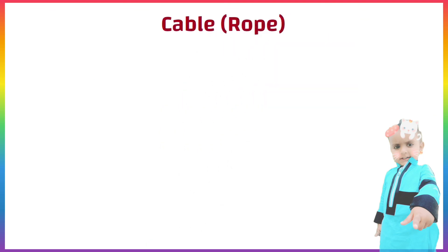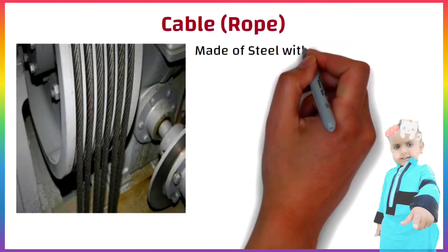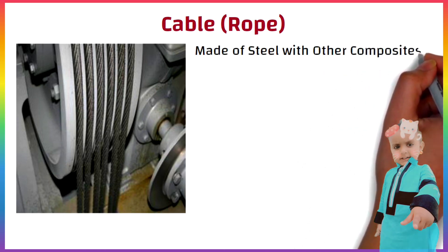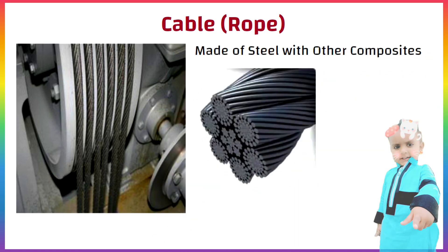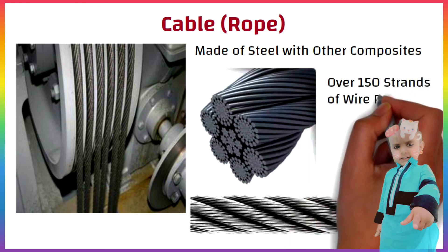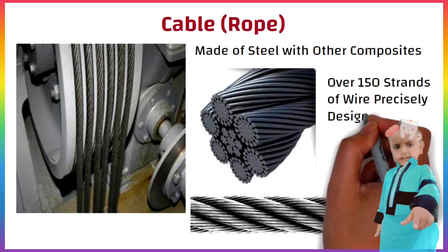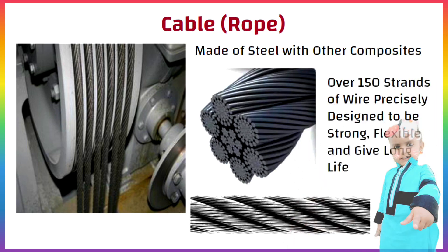Elevator ropes are highly engineered and made of steel with other composites. They are not single wires but several strands of various sizes wrapped together. A typical cable or rope can have over 150 strands of wire, precisely designed to be strong, flexible and give long life.